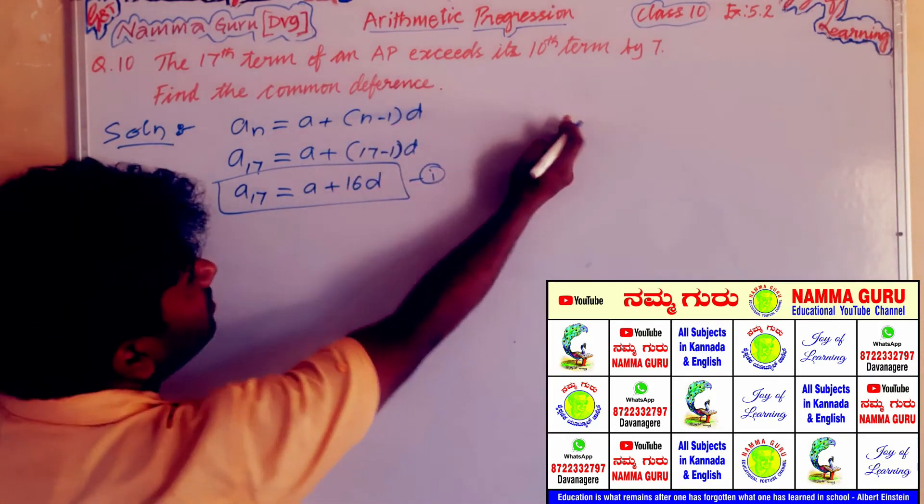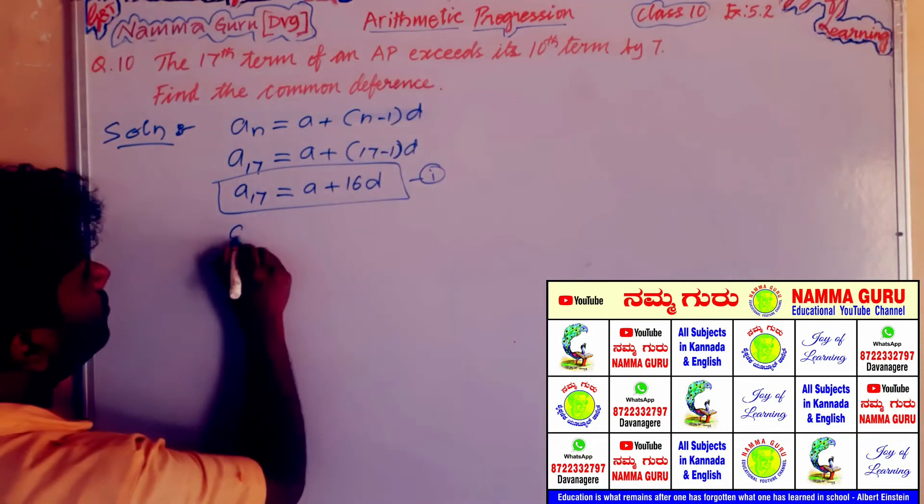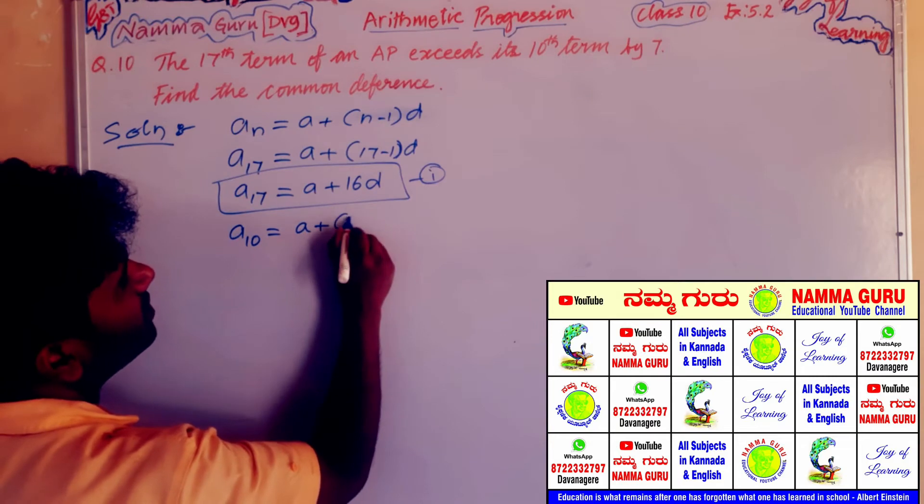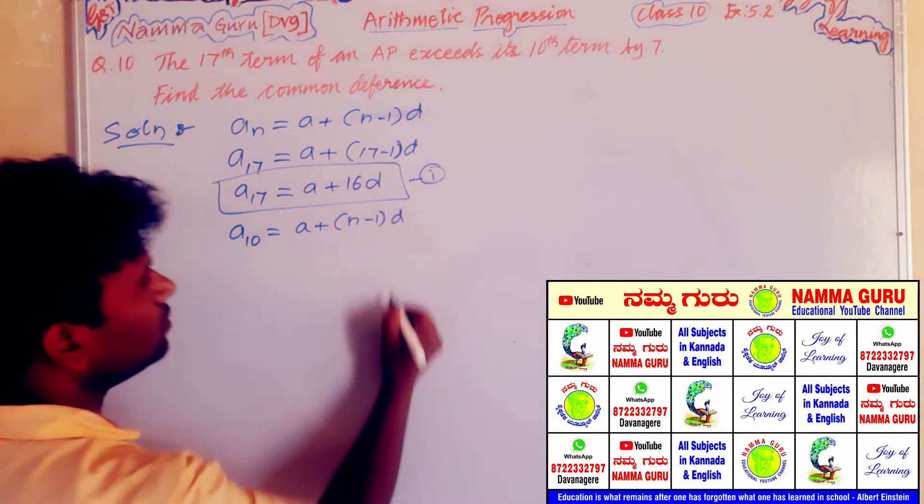The 10th term of an AP, a_10, is equal to a plus n minus 1 into d.